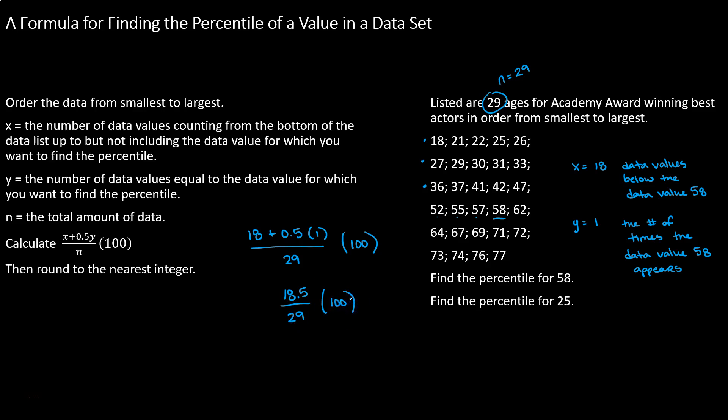We can pull our calculator out for that: 18.5 divided by 29 multiplied by 100. Then I get the value 63.79.